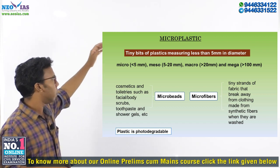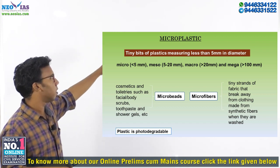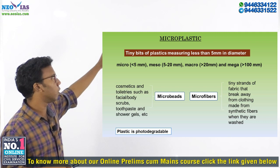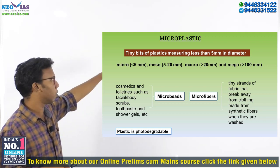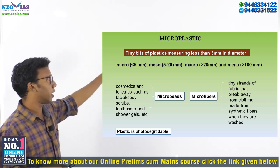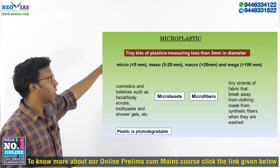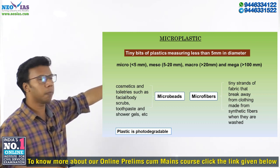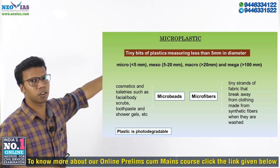If the plastic bits have a size between 5 to 20 mm then we can call it as meso. Greater than 20 mm we can call it as macro, and greater than 100 mm we can call it as megaplastic. So that is the classification.